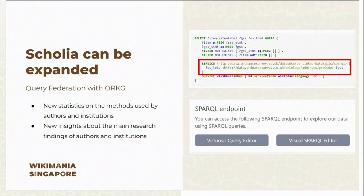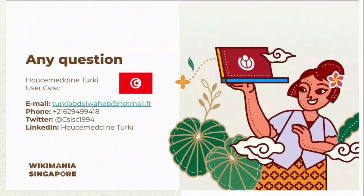Since ORKG is an RDF Linked Data graph, it has its own SPARQL endpoint. At this point, we can use query federation with ORKG to generate federated queries and have integrated results that include insights from both Wikidata and ORKG at once. I think this idea is very important to bring Scolia and Wikicite to the next stage of development of real-time research assessment. Feel free to reach out to me if you have any questions.